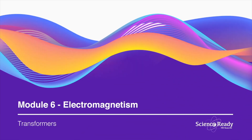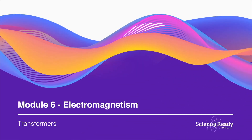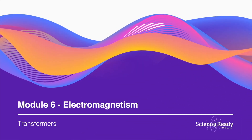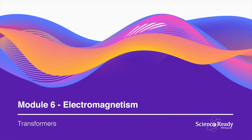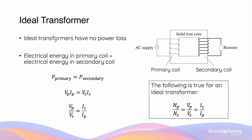This video is on efficiency and power loss in transformers. Ideal transformers are transformers that have no power loss — that is, the electrical power input from the primary coil is equal to the electrical output from the secondary coil.